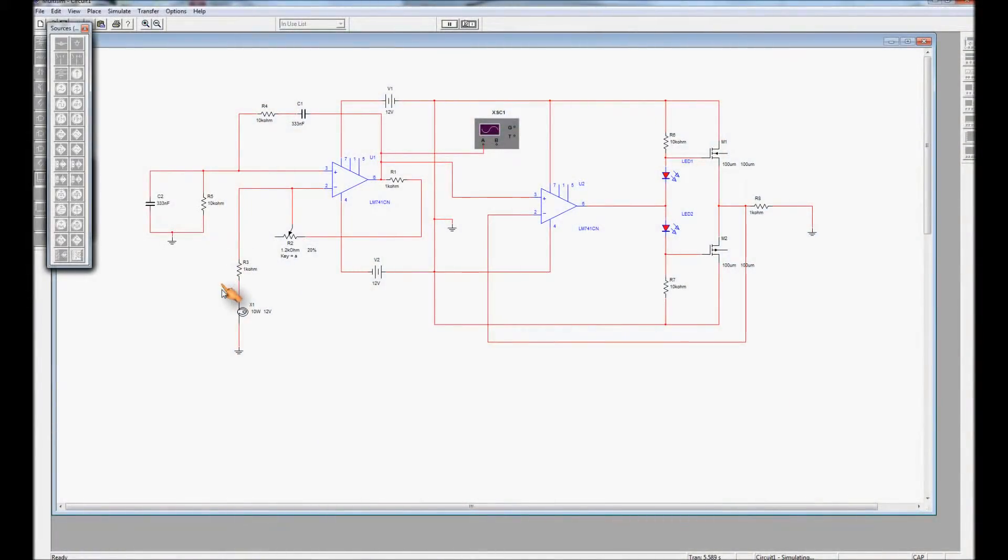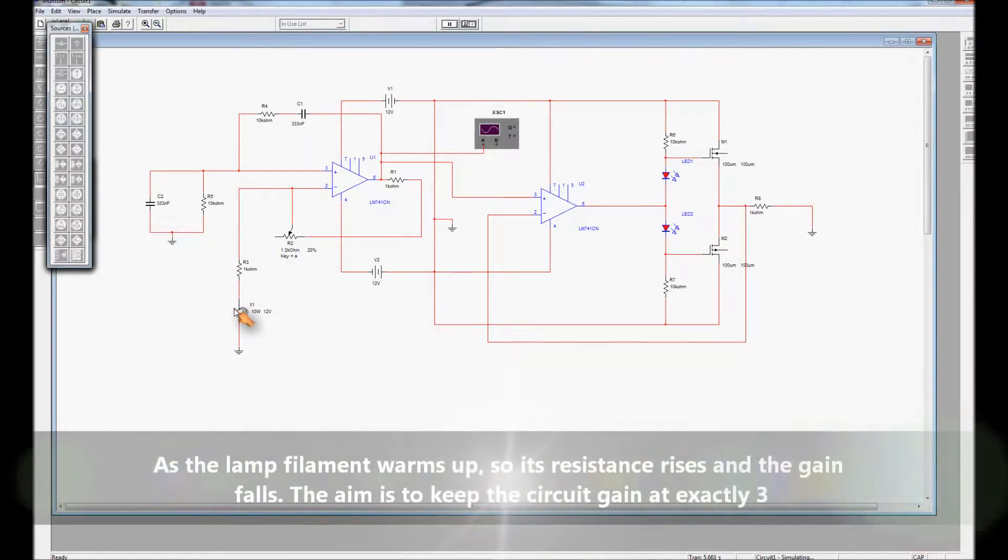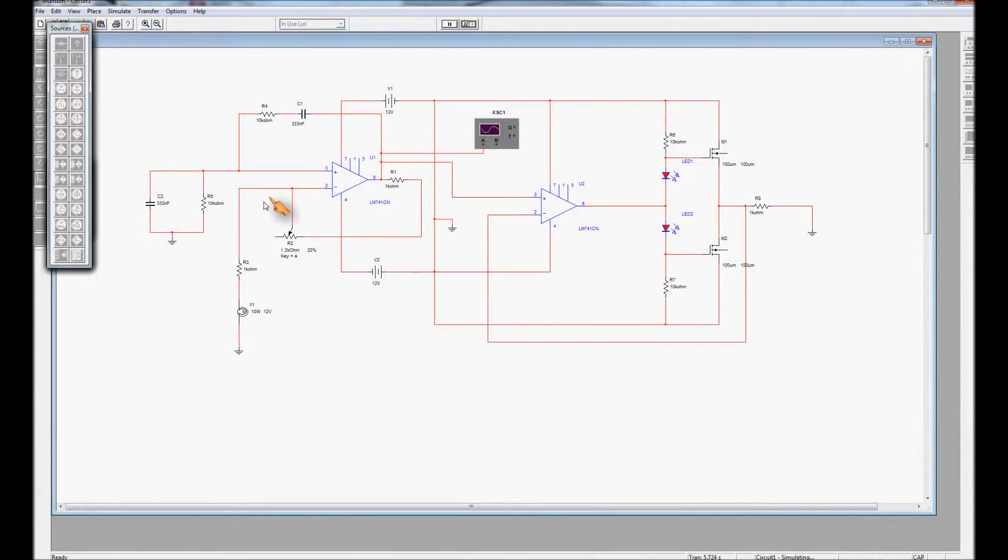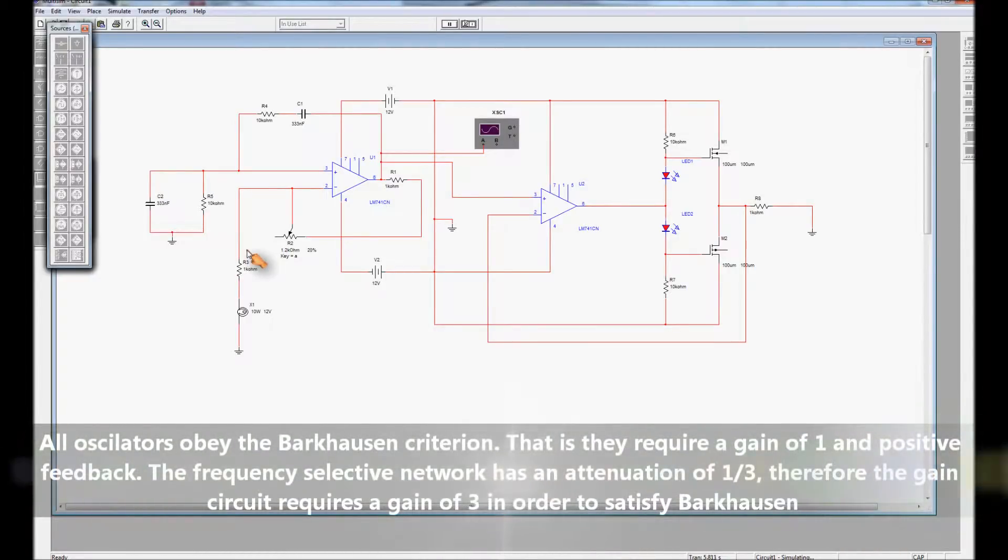And then we have R3 and a lamp. Now the lamp plays an important part in this circuit. For a Wien bridge oscillator to oscillate we need this network to provide a gain of 3. And it must stay at a gain of 3. If it goes lower than 3 the oscillations begin to die away. And if it goes higher than 3 the oscillations begin to saturate.